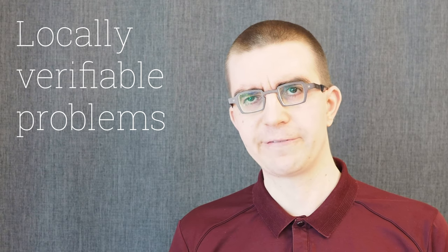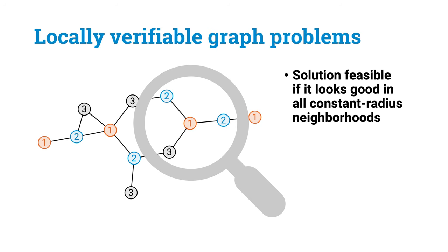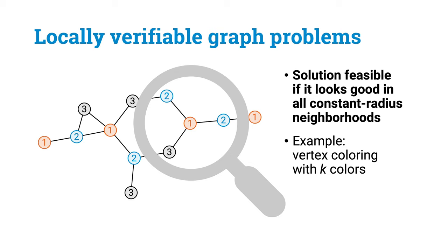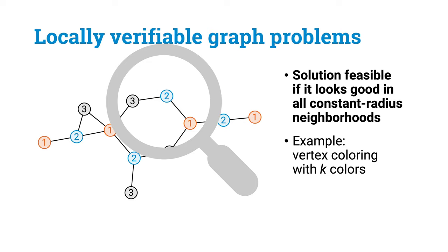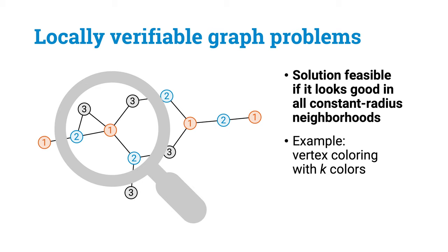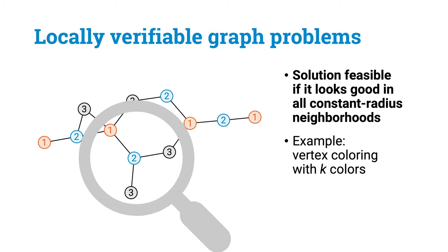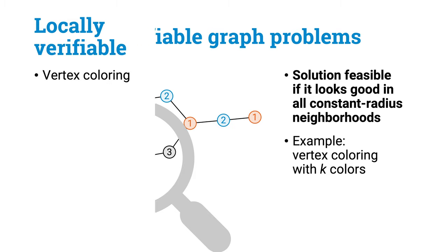But first we need to go back to the 1990s, when Naor and Stockmeyer introduced a simple but important concept: locally verifiable problems. We say that a graph problem is locally verifiable if it is enough to check all constant-radius neighborhoods to ensure that the solution is feasible. Graph coloring with k colors is a simple example: if I give you some labeling of the nodes and claim it is a proper vertex coloring, you can verify it by checking each local neighborhood — just look at each node and its immediate neighborhood. If the coloring looks good in all local neighborhoods, the solution is correct.